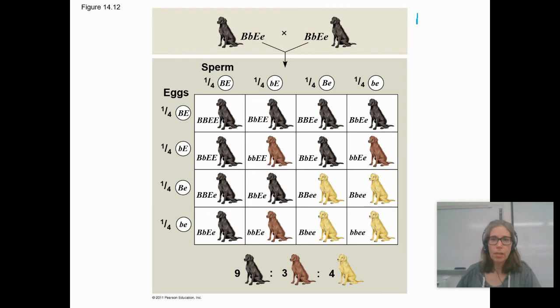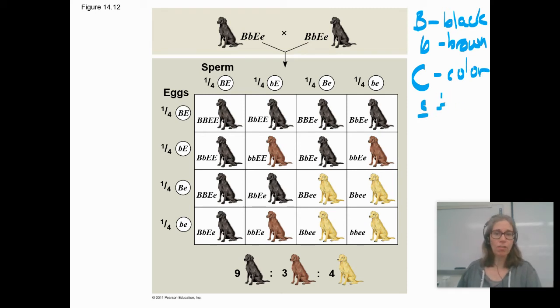Let's say big B codes for black fur and little b codes for brown fur. Big C says you get to have some kind of color, and little c says you're going to be albino. In mice, it might be saying you're going to be albino. In these dogs, it says you're going to be yellow, as in not the darker brown or brown or black.